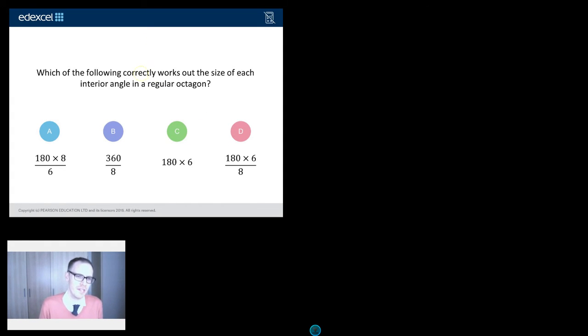So, it goes a little something like this, and it's been kindly provided by Edexcel. Which of the following correctly works out the size of each interior angle in a regular octagon?